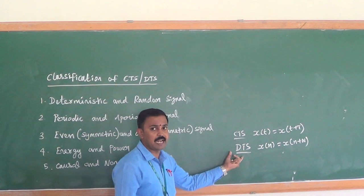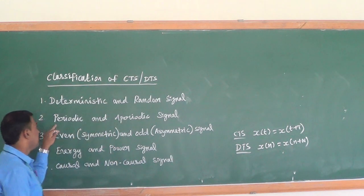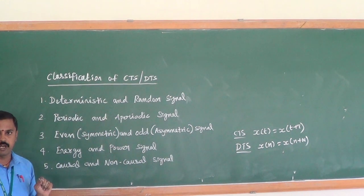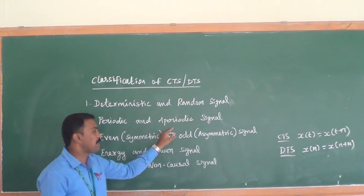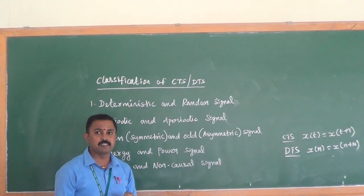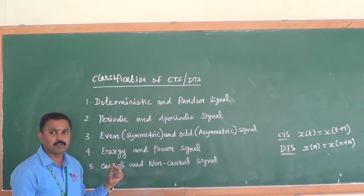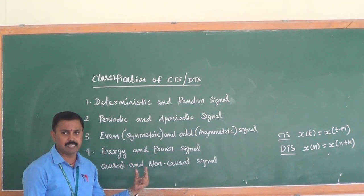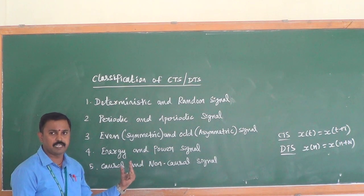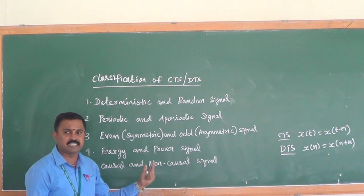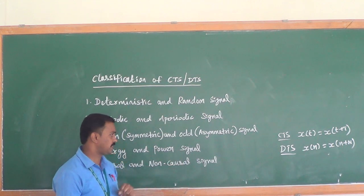This is the mathematical analysis of periodic and aperiodic signals. Periodic means the signal repeats at regular intervals; aperiodic means it does not repeat at regular intervals. The condition is x(t) = x(t + T). If this condition is satisfied, the signal is periodic; if not, it is aperiodic.